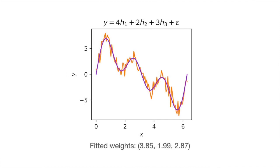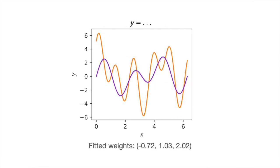For the noisy signal, we still get a reasonably decent recovery of the weights, but there are a few small errors introduced by the noise. In the case of the third signal, constructed out of frequencies and phase offsets that are not present in the basis, we get a completely nonsense fit. In this case there are no sensible weights to recover, and so whatever is produced is going to be more or less meaningless.